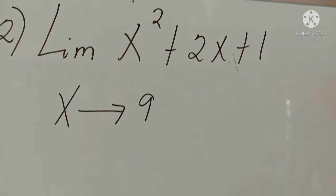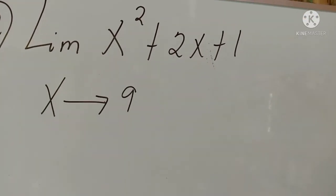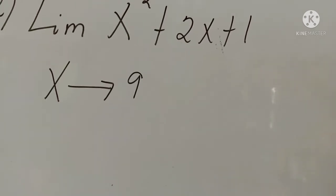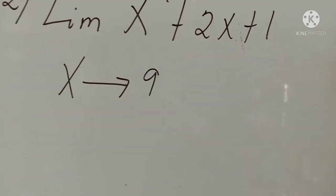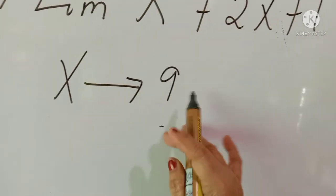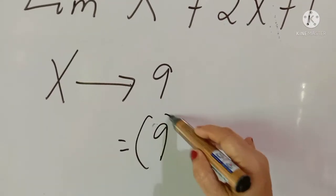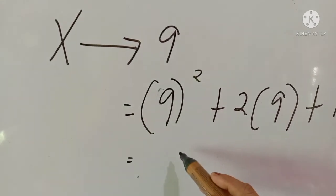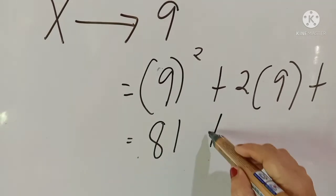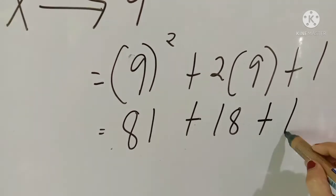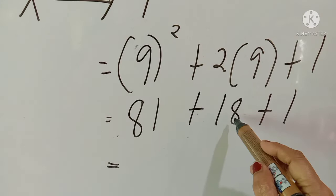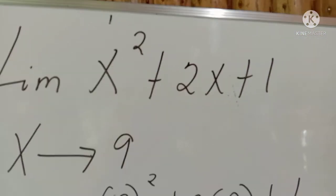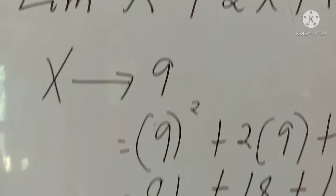Example number two: find the limit of x² + 2x + 1 when x approaches 9, using the limit of a power of a function. Since x approaches 9, we substitute 9 into the equation: 9² + 2(9) + 1. Simplifying: 9² = 81, 2×9 = 18, so 81 + 18 + 1 = 99 + 1 = 100. Therefore, the limit of x² + 2x + 1 when x approaches 9 is equal to 100.